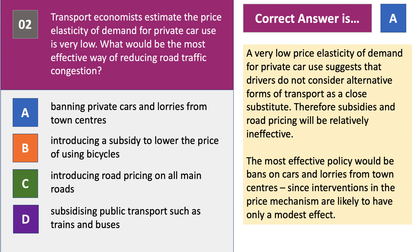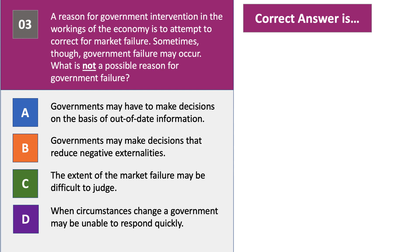Question number three is coming up. A reason for government intervention is to attempt to correct for market failure. Sometimes though, government failure may occur. What is not a possible reason for government failure? Here's a chance to have a go at question number three.